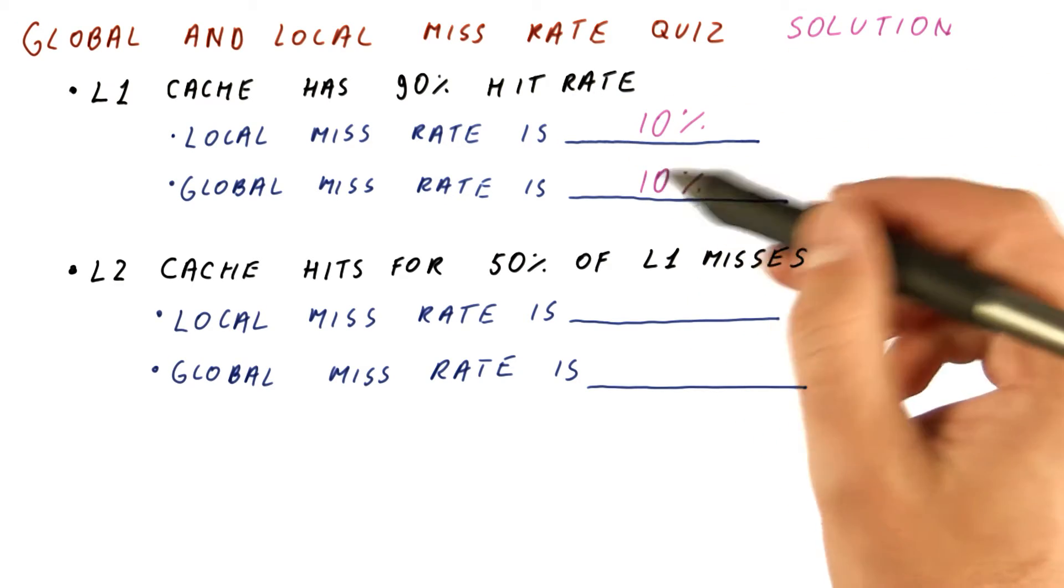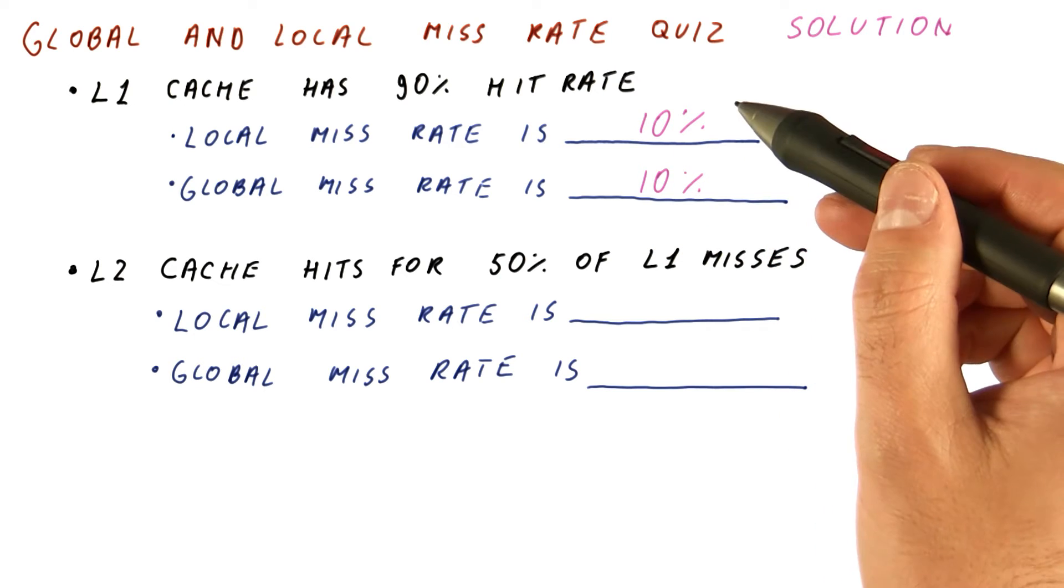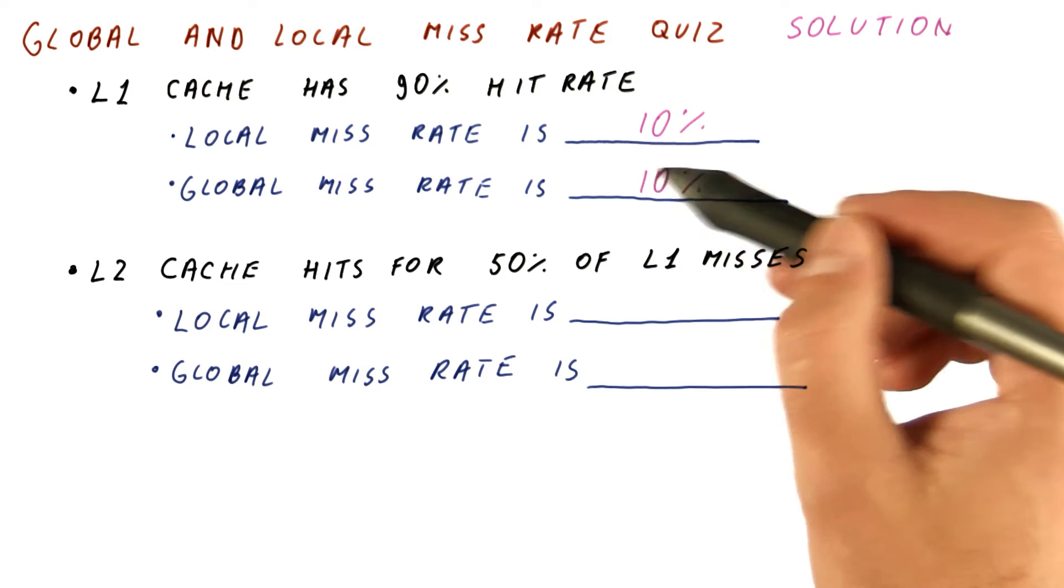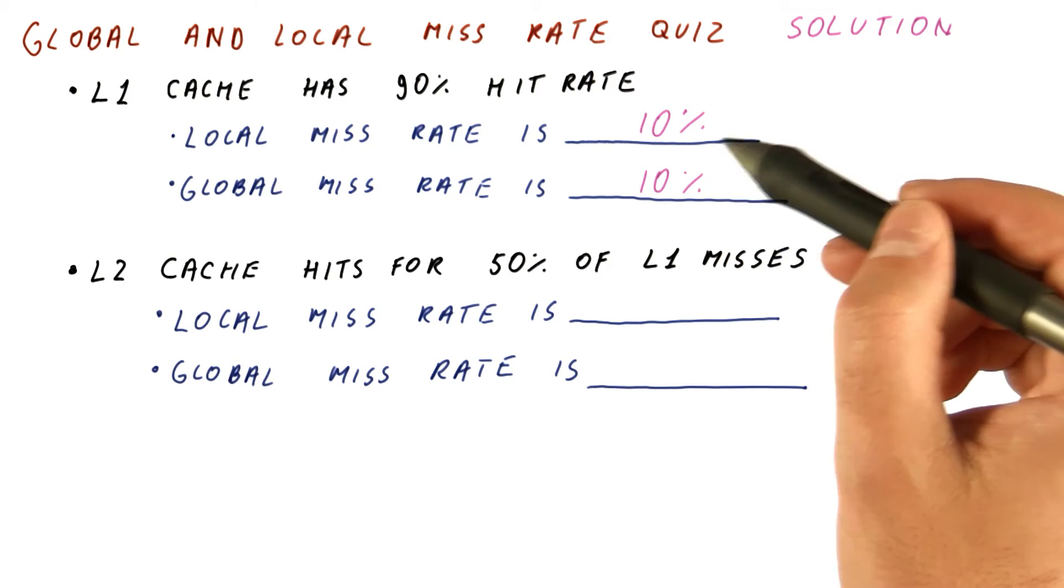Because that's what percentage of all processor accesses misses in this cache, and that is also the percentage of things that reach this cache that miss in it.